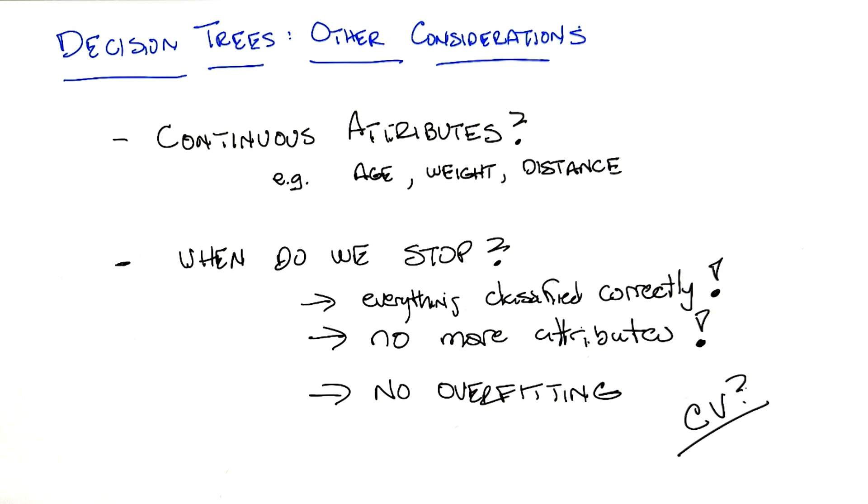You could go to the leaves of the tree and say, well, what if I collapse these leaves back up into the tree? How does that create error on my validation set? And if the error is too big, then you don't do it. And if it's very small, then you go ahead and do it. And that should help you with overfitting.